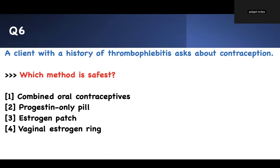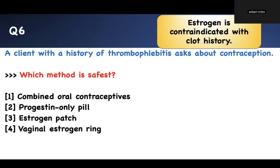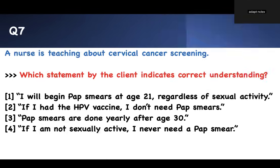Question six: a client with a history of thrombophlebitis asks about contraception. Which method is safest? Thrombophlebitis means the patient developed clots and inflammation in the veins. The key concept is that estrogen causes DVT, so anything containing estrogen should be avoided. Combined oral contraception contains estrogen — avoid it. An estrogen patch contains estrogen — avoid it. A vaginal estrogen ring contains estrogen — avoid it. Progesterone-only has no estrogen, so number two is the right answer.